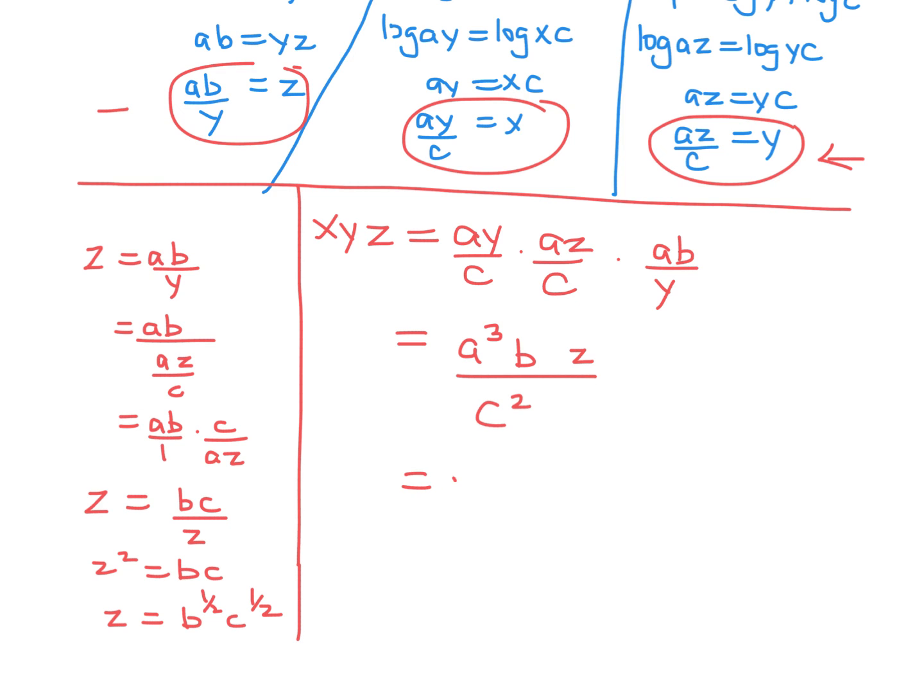Then I guess I sub that into there. So A to the power of 3, B, B to the half, C to the half, all over C squared. That's good. Now I just have ABCs. Let's combine all this. A to the power of 3, B to the 3 over 2. And that's all going to be over C to the 3 over 2, I believe. And there you go. You got XYZ in terms of just ABC.